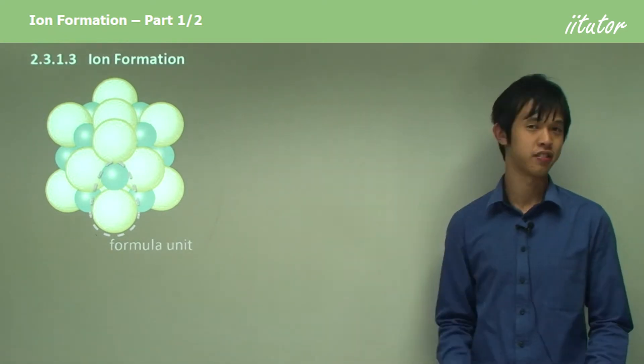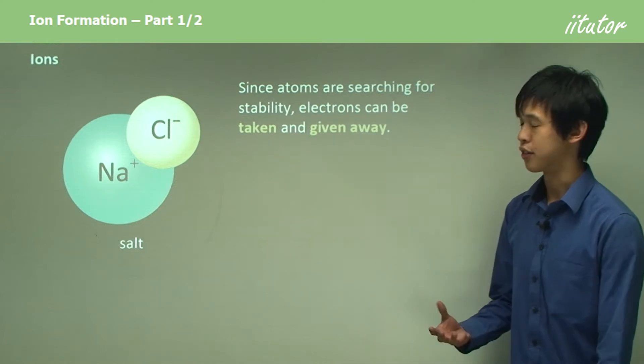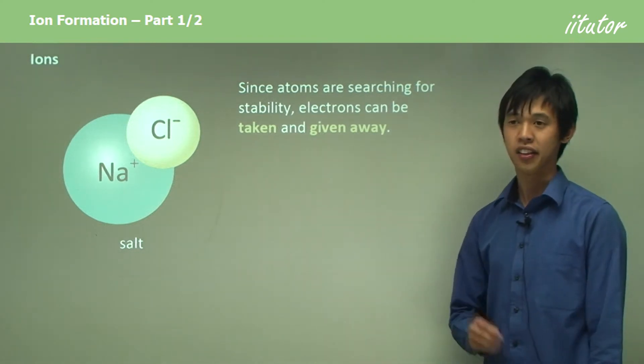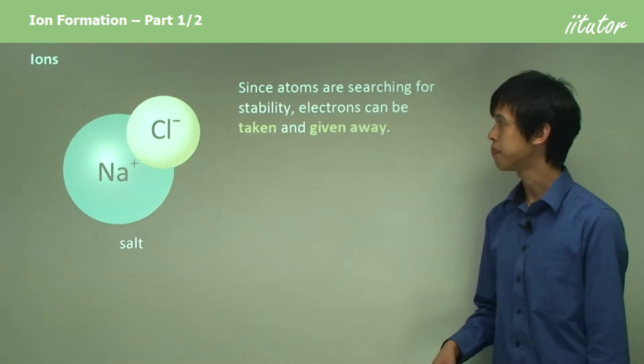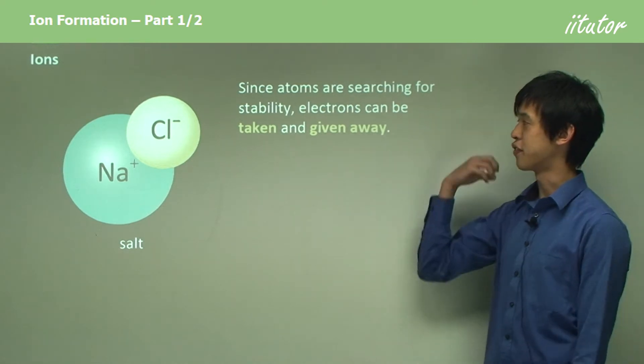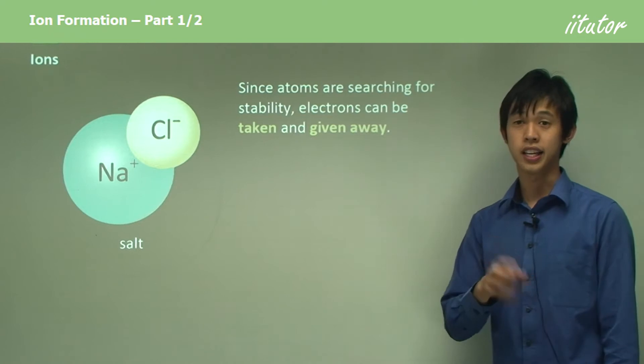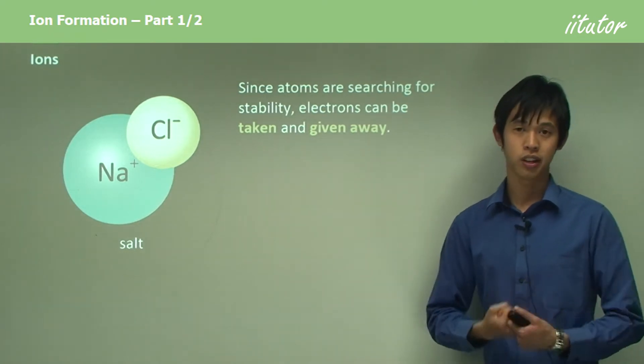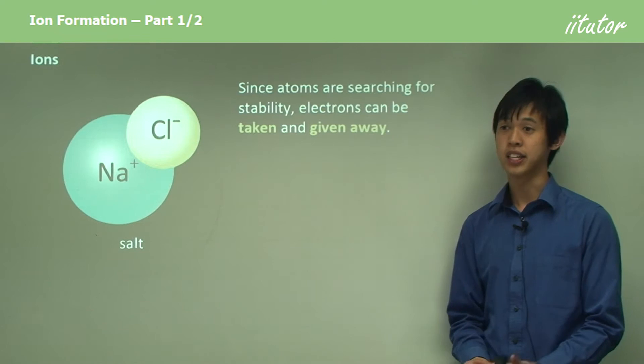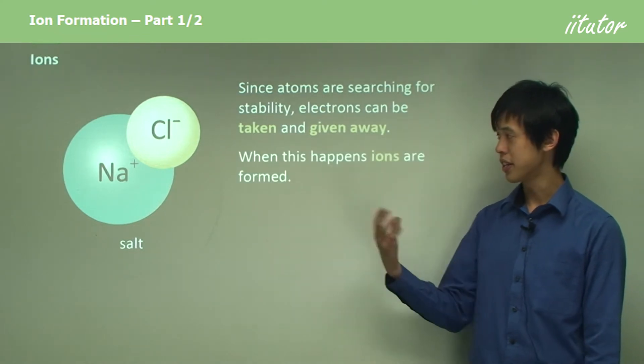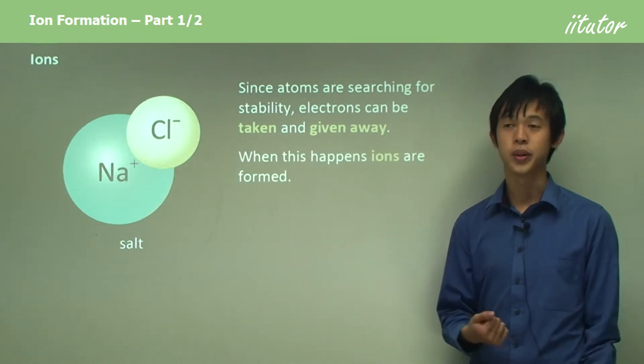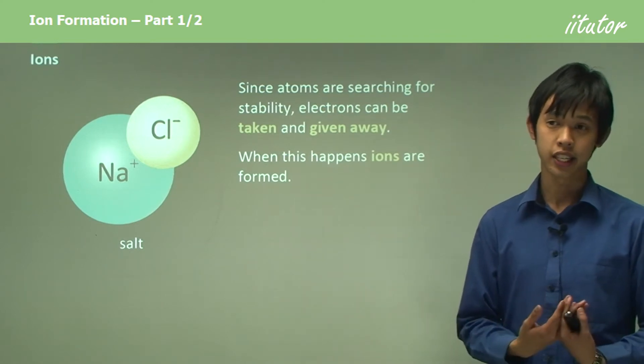So, sort of like a free market of electrons. Ions - what are ions in the first place? Since atoms are searching for stability, that's their goal. Electrons can be taken and given away. If I'm an atom I could take an electron or I could give them away, and that's how I can achieve stability.